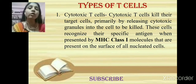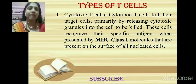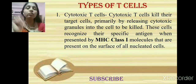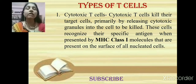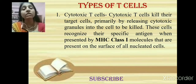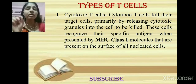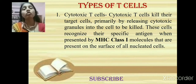Before discussing how T cells develop within the thymus, let us first discuss which types of T lymphocytic cells are produced there. The name 'T lymphocyte' is given due to the site of production — the thymus. The first type of T lymphocytic cell is the cytotoxic T cell.